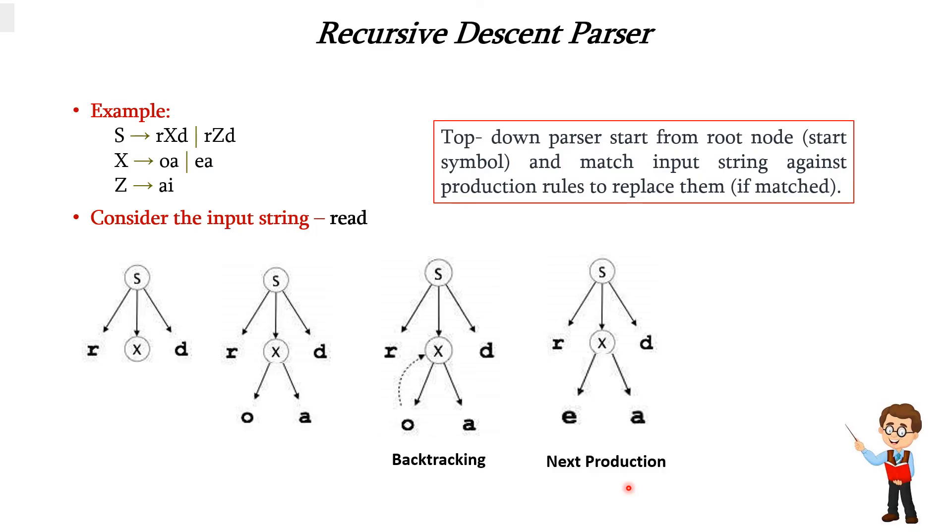So if we apply this next production, we are getting the exact input string, that is r, e, a and d. Thus we have attained the input string through recursive descent parser. From this we can understand that if we are not able to get the right production, we can backtrack and find the alternate production until we get the matching input string. Thank you.